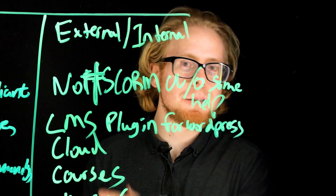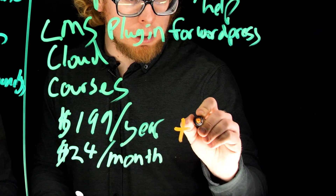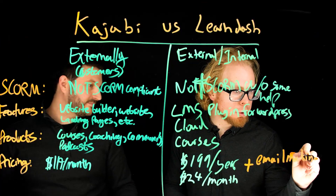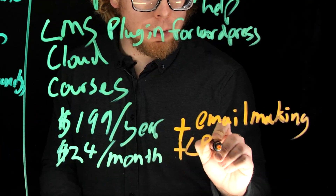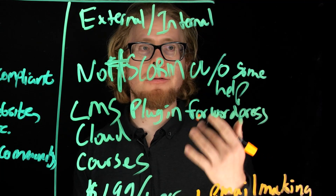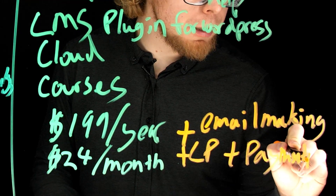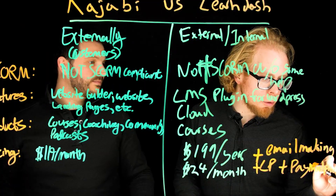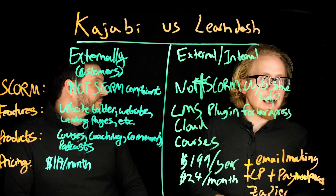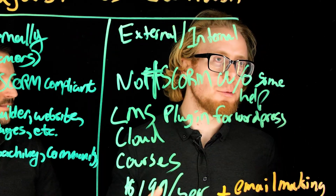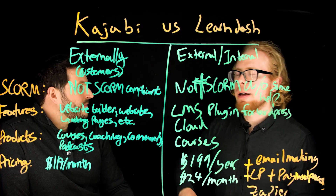The benefit of LearnDash is if your business is already set up on WordPress, you pay $200 and integrate an LMS. But you're still going to need email marketing, a landing page builder if using the Cloud version, and payment processing — likely requiring Zapier as well. All this stuff costs money, so realistically the total cost becomes comparable to Kajabi's pricing, except now you have four different apps instead of one.